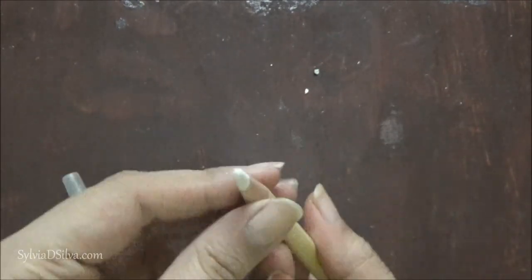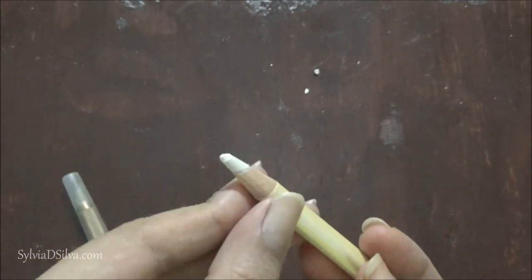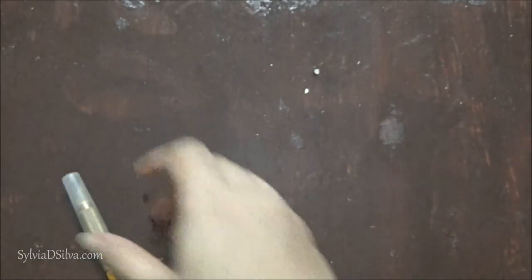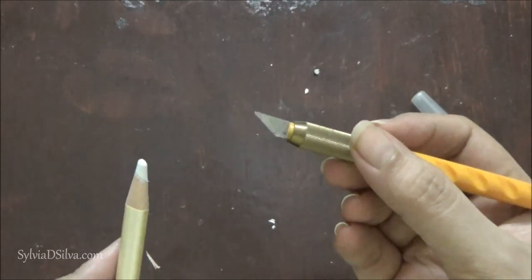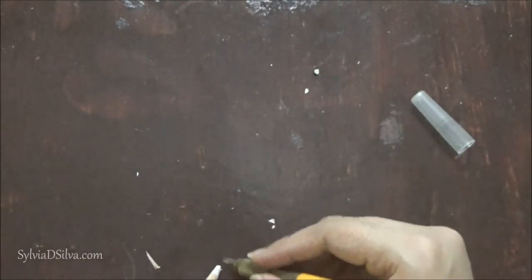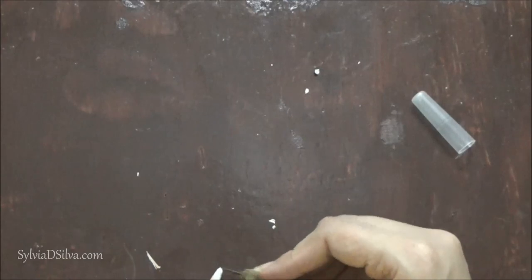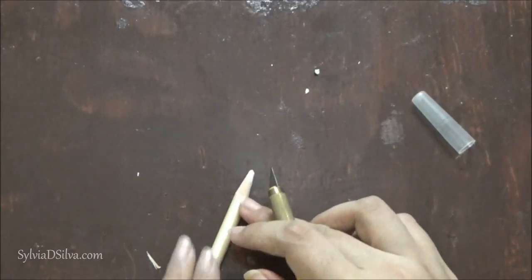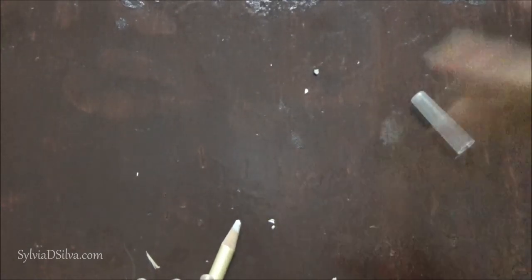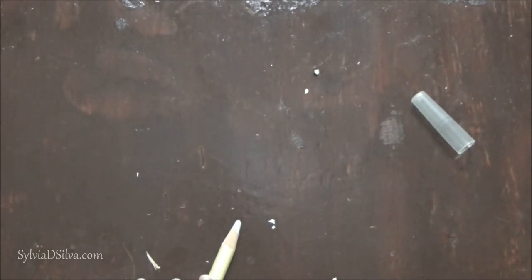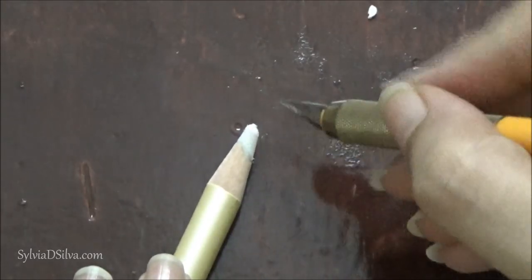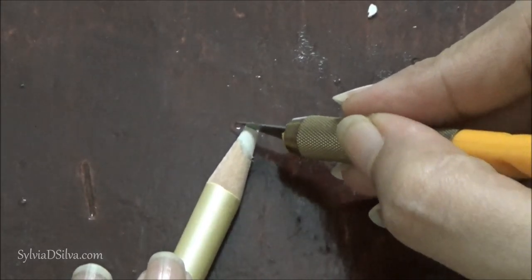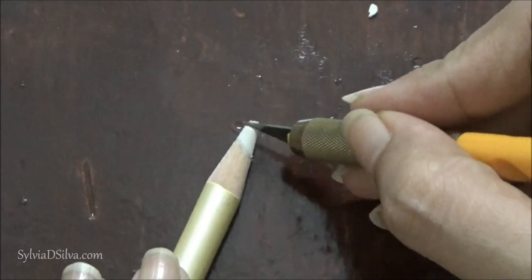A blunt eraser is no use, so what you do is you take a craft knife. I'm using an Exacto knife and you hold this horizontal, all right? And you just cut it. Let me just zoom in for you. All right, so you just cut it straight.